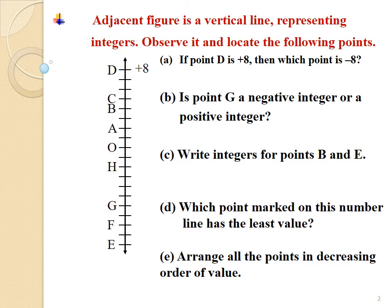We have to write the correct integers for the remaining points: C, B, A, O, H, G, F, and E. We know that on a vertical line, at the top, the larger number is written and at the bottom, the smaller number is written. So we have to write integers smaller than 8 for each division.